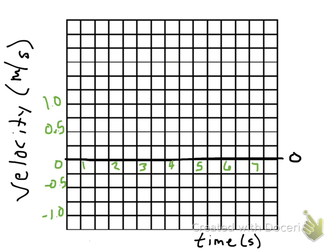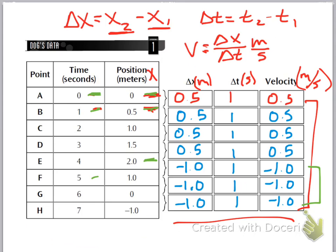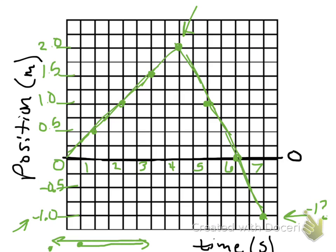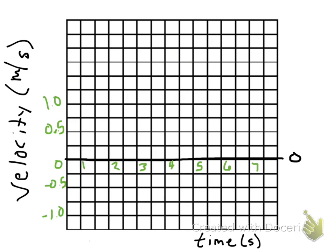Now if we go over to our velocity versus time graph, things are going to look a little bit different. Looking back at our table, velocity is the same — it's 0.5, 0.5, 0.5. The first one is between 0 and 1, so between 0 and 1 it's at 0.5 — right here. Between 1 and 2 it's at 0.5 — right here. Between 2 and 3 it's at 0.5 — right here.